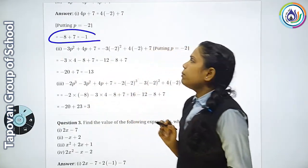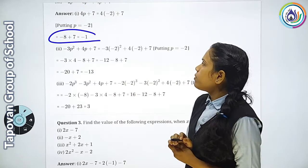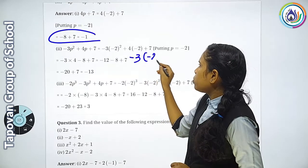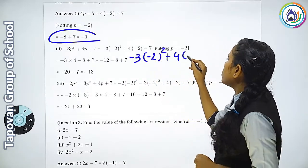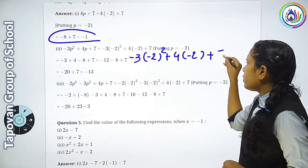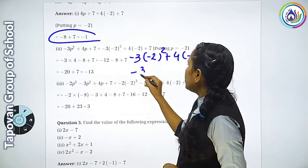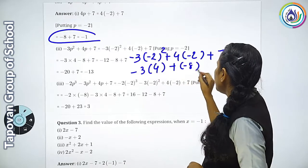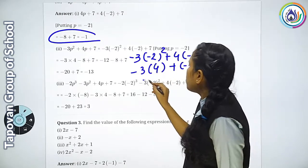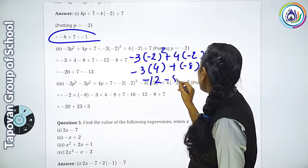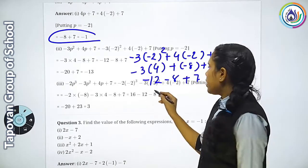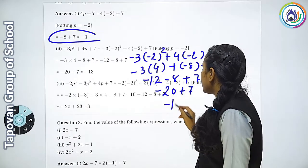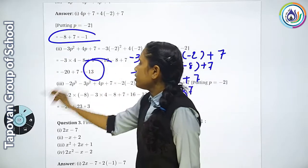Second number: 3p²+4p+7. तो 3×(-2)²+4×(-2)+7. (-2)² = 4, तो 3×4=12. 4×(-2)=minus 8. 12-8+7=minus 20+7=minus 13. Answer कितना आया? Minus 13.